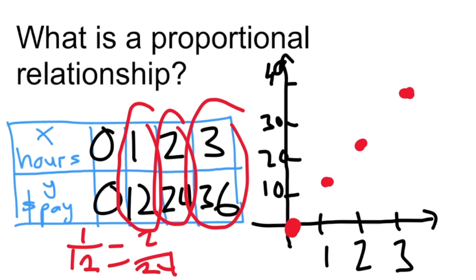Proportional relationships should make a line, and specifically that line has to go through the origin. Proportional relationships will go through the origin.